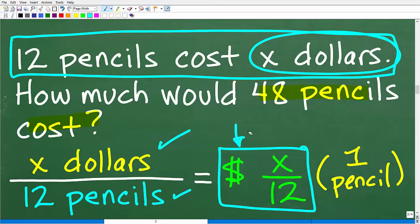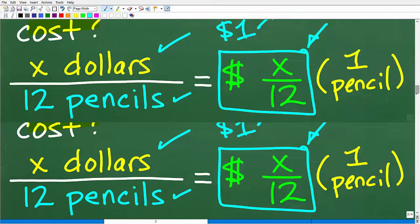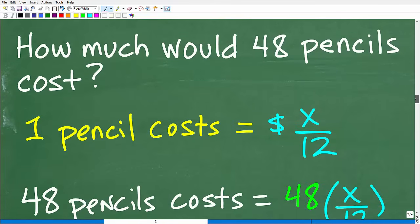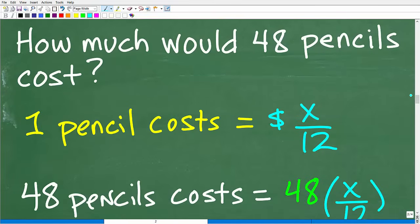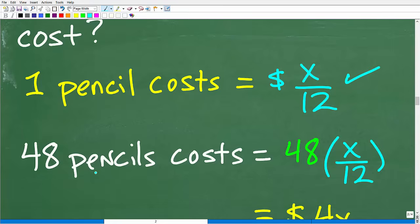All right. So let's suppose one pencil costs using our previous example $1, right? When we simplify this, well, how much would 48 pencils cost? Easy. We just multiply one times 48 or 48, but in this actual problem, one pencil cost us X over $12. So now that we know the cost of one pencil, this is going to be easy, right? So how much would 48 pencils cost? Well, how much does one pencil cost? It's X over $12. All right, fine. So to get the cost of 48 pencils, we're going to take 48 and multiply it by X over 12, the cost of one pencil.